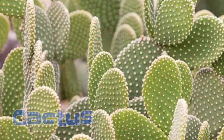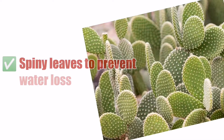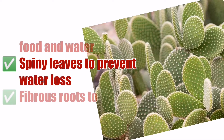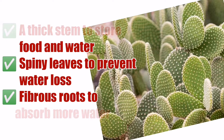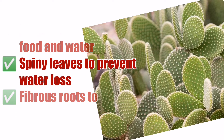Some cactus adaptations are: number one, it has a thick stem to store food and water; number two, spiny leaves to prevent water loss; and number three, cactus has fibrous roots to absorb water.